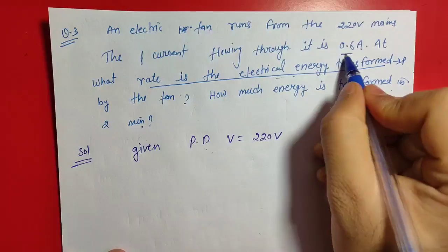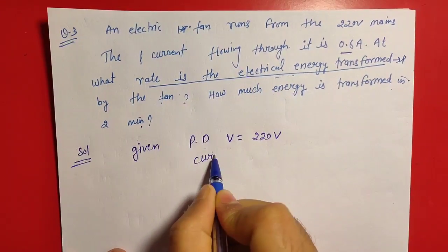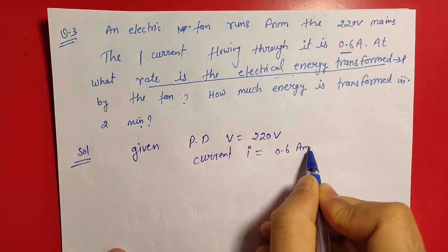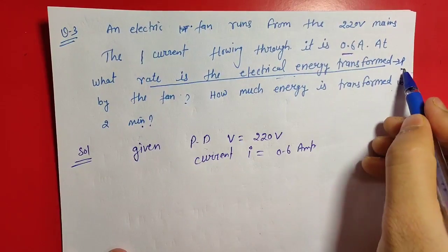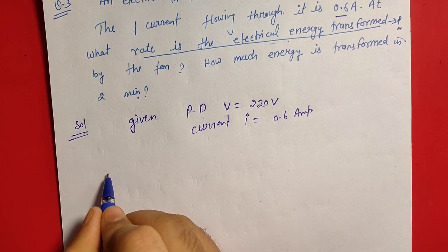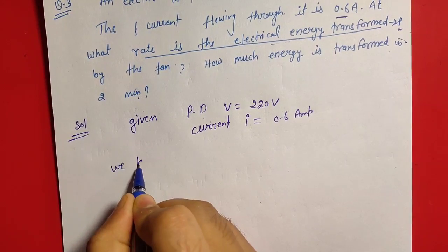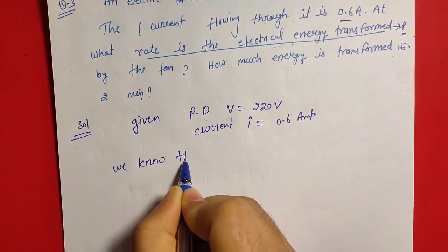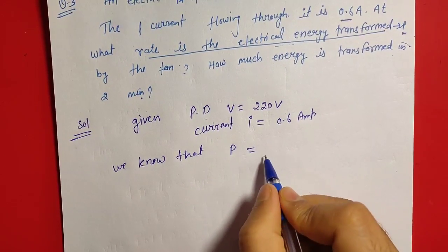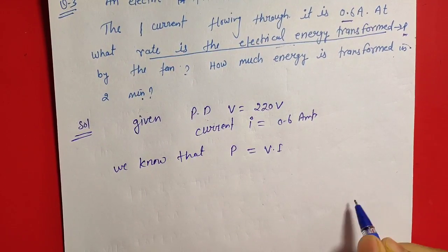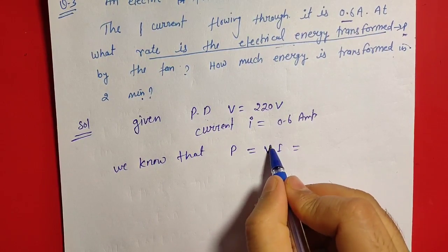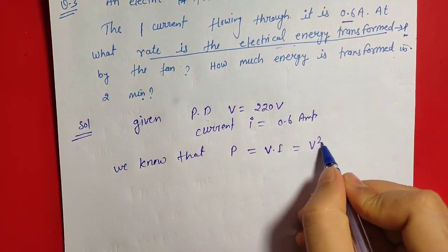We have given that potential difference across the fan is 220 volt and current I is equal to 0.6 ampere. We find out power. Power of electric fan, we know that power P is equal to V into I.